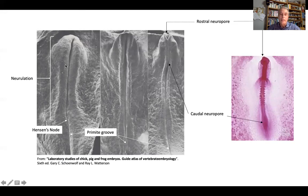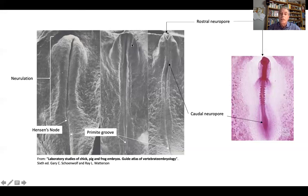Images taken from the textbook show that the Hensen's node has progressed caudally, with the primitive groove still present. Rostral to the Hensen's node, the ectoderm has begun folding to start forming the neural tube. The primitive groove has progressed caudally, and neural folds are coming together to meet at the midplane, forming the future neural tube with two openings: a rostral neural pore and a caudal neural pore. Here you have a chick embryo with the rostral neural pore still open. The first neural pore to close is the rostral one.